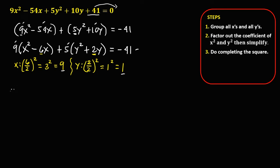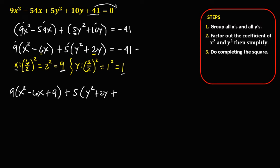Add these numbers to the equation. We have 9 times (x squared minus 6x plus 9), plus 5 times (y squared plus 2y plus 1), equals negative 41.